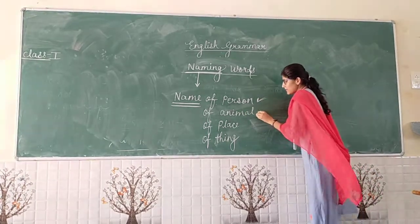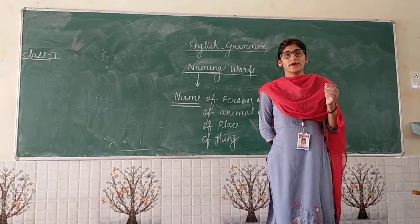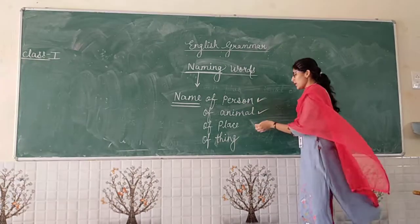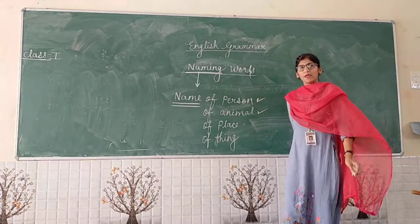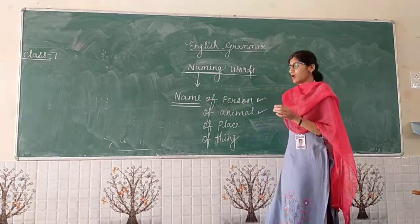Animals: dog, cat, cows, bats — okay? And places: every place has a name. These are all examples of naming words.